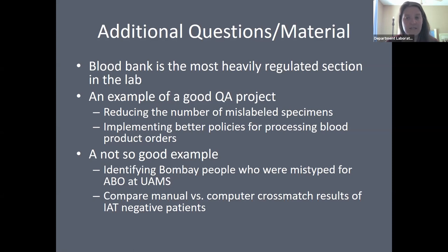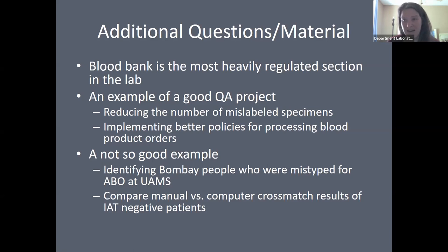An example of a poor QI project would be identifying Bombay patients who were mistyped for ABO at your institution — Bombay is extremely rare, so the sample size would be too small to be worth the committee's time and effort. Comparing manual versus computer crossmatch results for IAT-negative patients is another example — for IAT-negative patients, the computer can adequately choose units based on ABO compatibility.